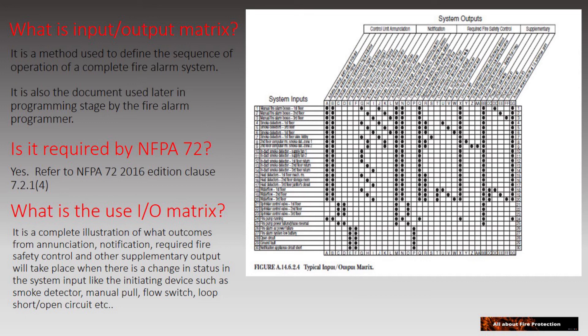So what is an input and output matrix? It is a method used in fire alarm for designers and programmers to show their intended sequence of operation for the complete fire alarm system. Basically, once the input and output matrix is done, it can be used at the same time for programming of the fire alarm control panel.